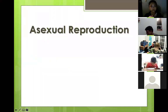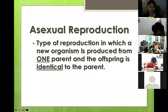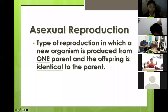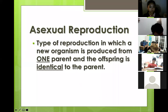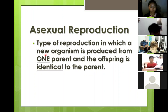So first, we are going to start with asexual reproduction. By definition, asexual reproduction is a type of reproduction in which a new organism is produced from one parent, and the offspring is identical to the parent. Asexual reproduction is different from how humans reproduce — when humans reproduce, you have a mother and a father, and your parents produce you. But in asexual reproduction, the organism is produced by only one parent. There is no mother, there is no father — there is only one parent. And because there is only one parent, the offspring is identical to that parent.